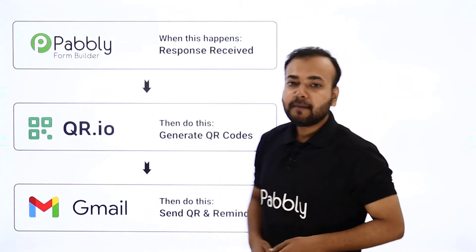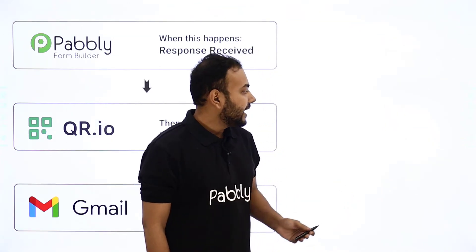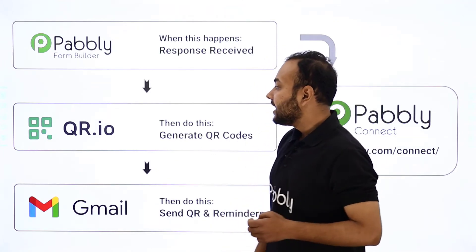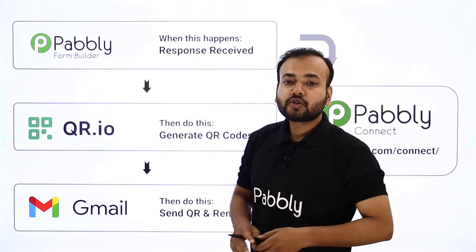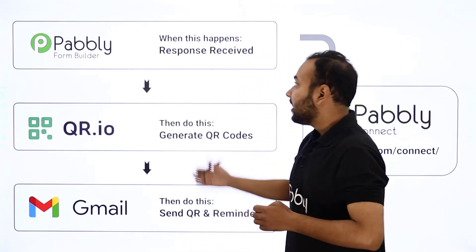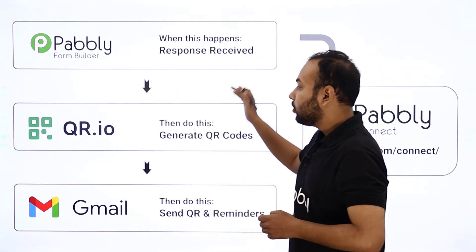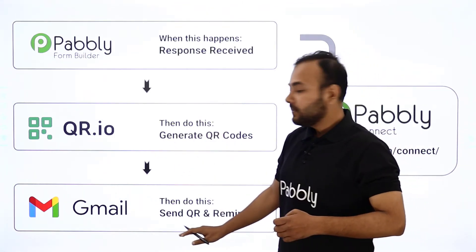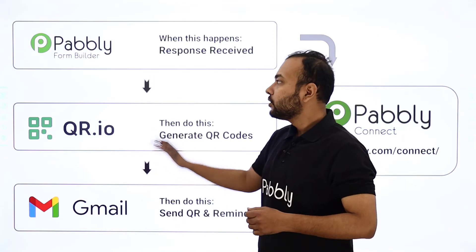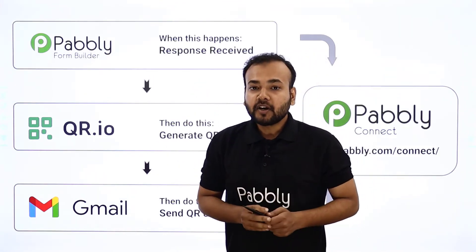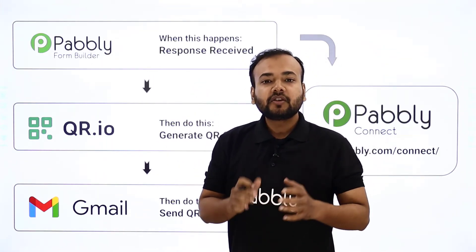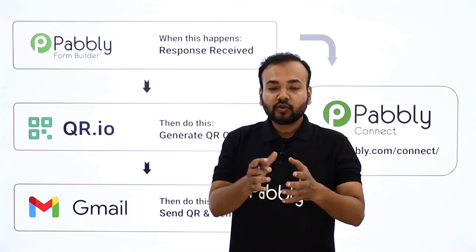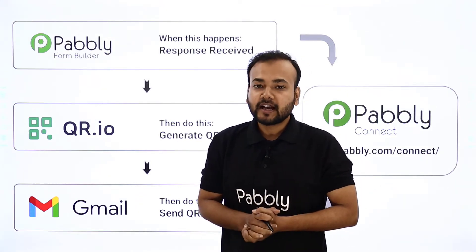To make this automation happen, I'm using a software called Pabbly Connect. Pabbly Connect is an integration and automation software that will connect these three applications together so that whenever we receive a response from Pabbly Form Builder, a QR code will get automatically generated and delivered via Gmail as a new email to the person who filled the form. The best part is that you will not require any coding skills or programming knowledge.